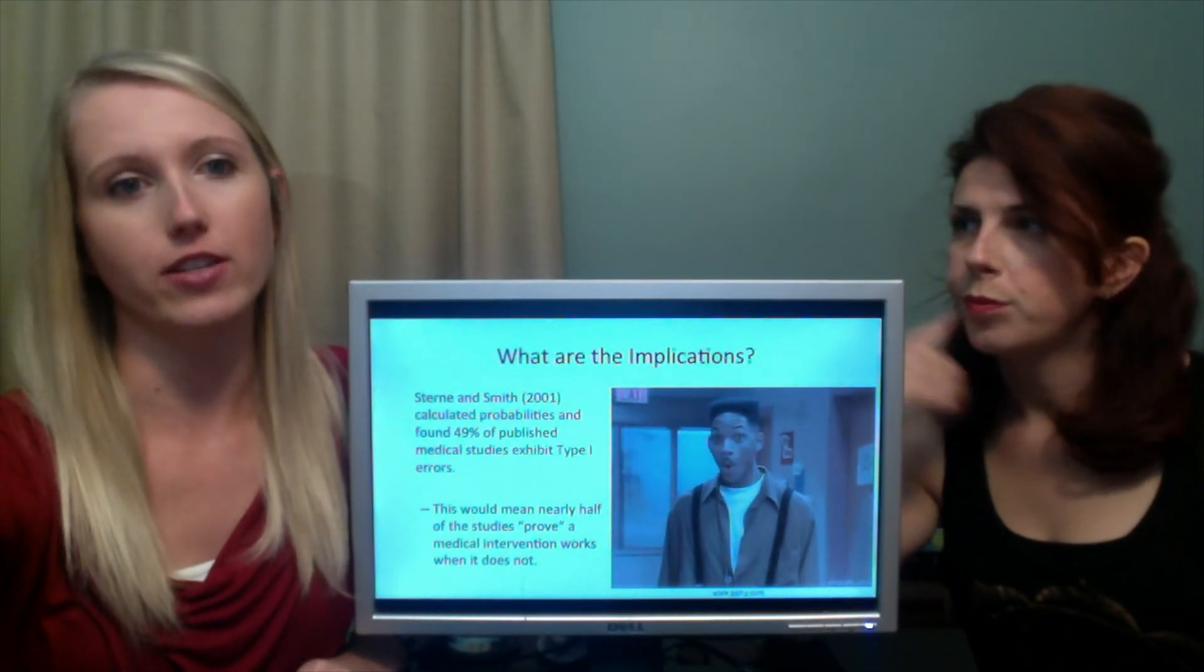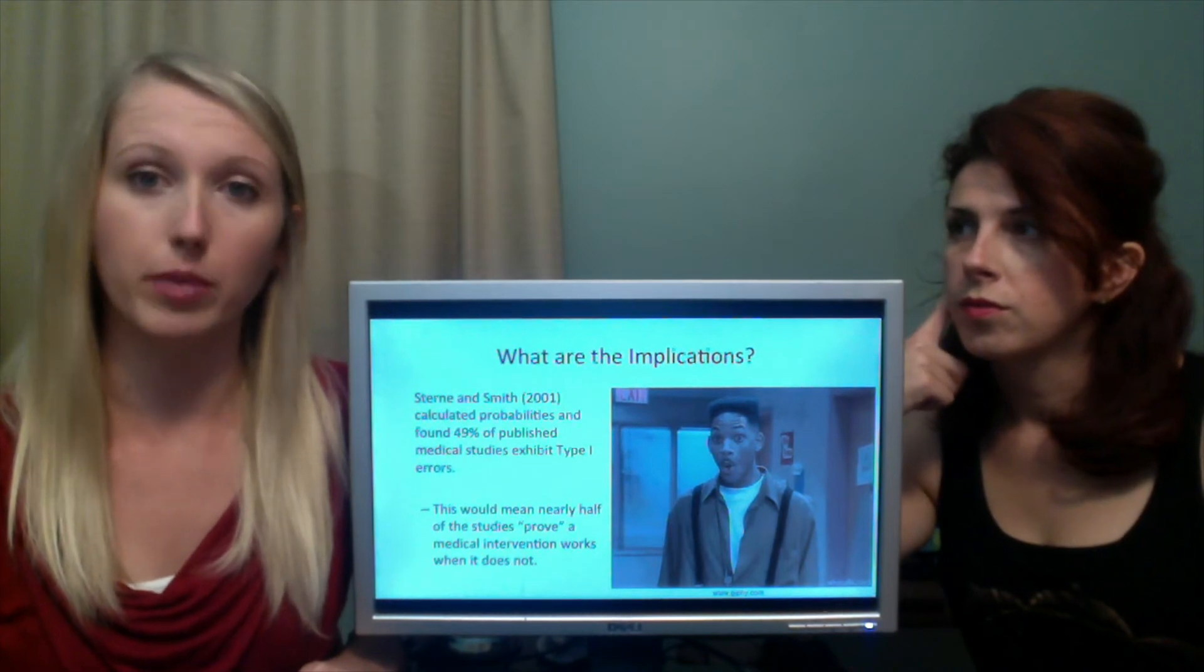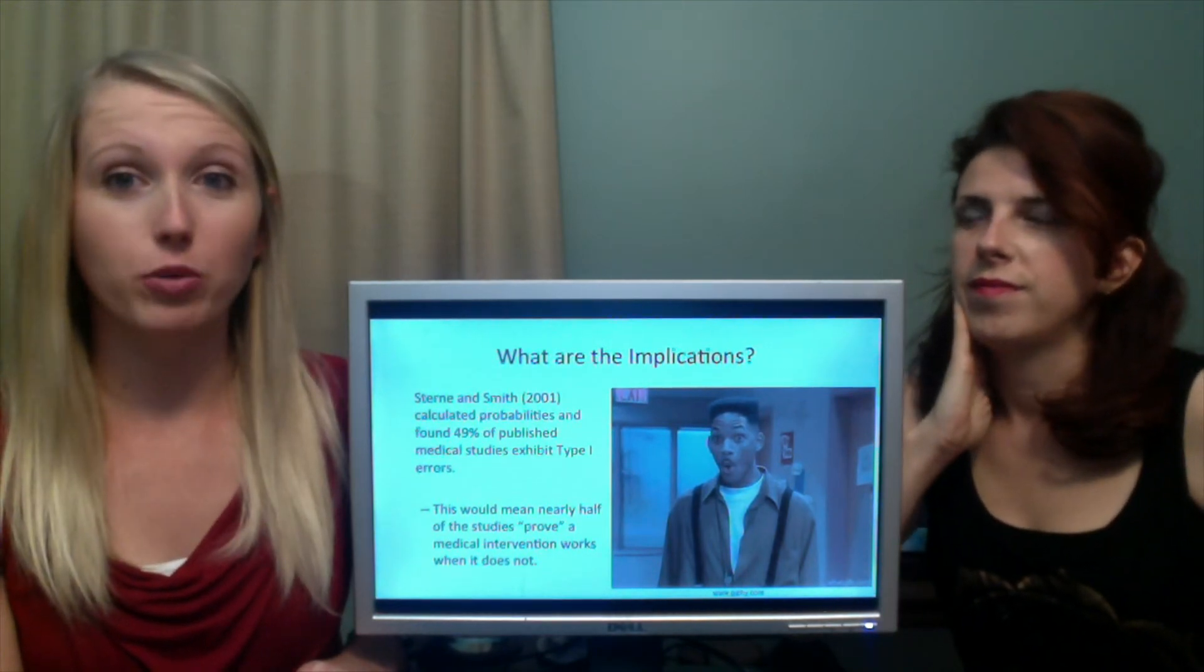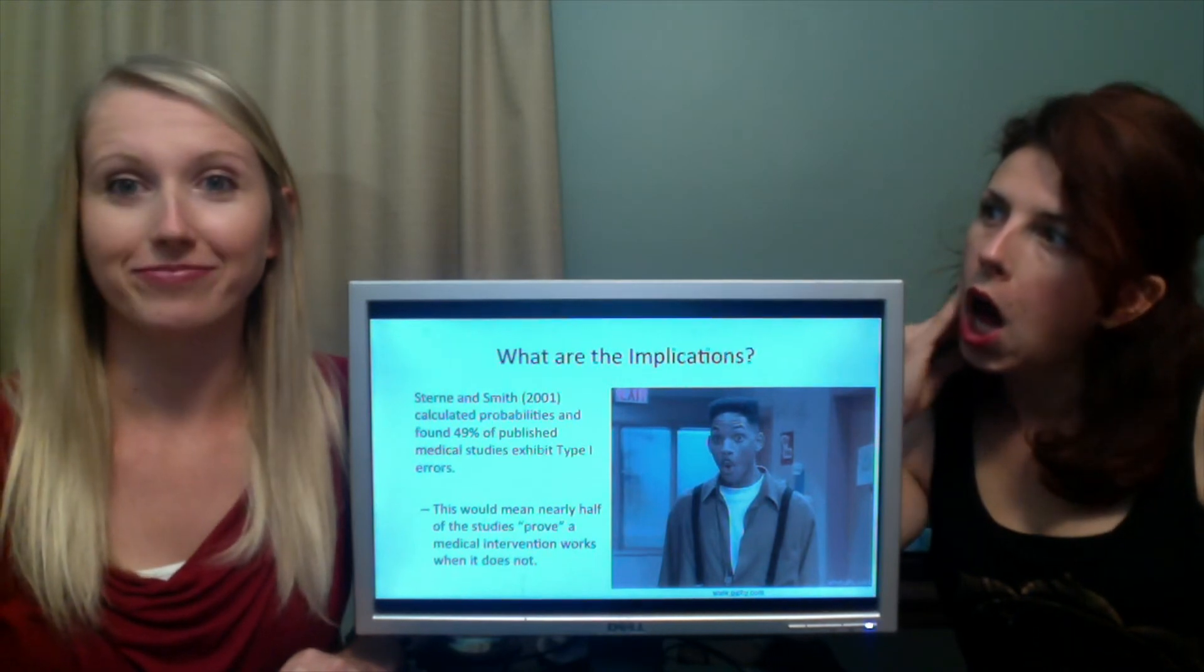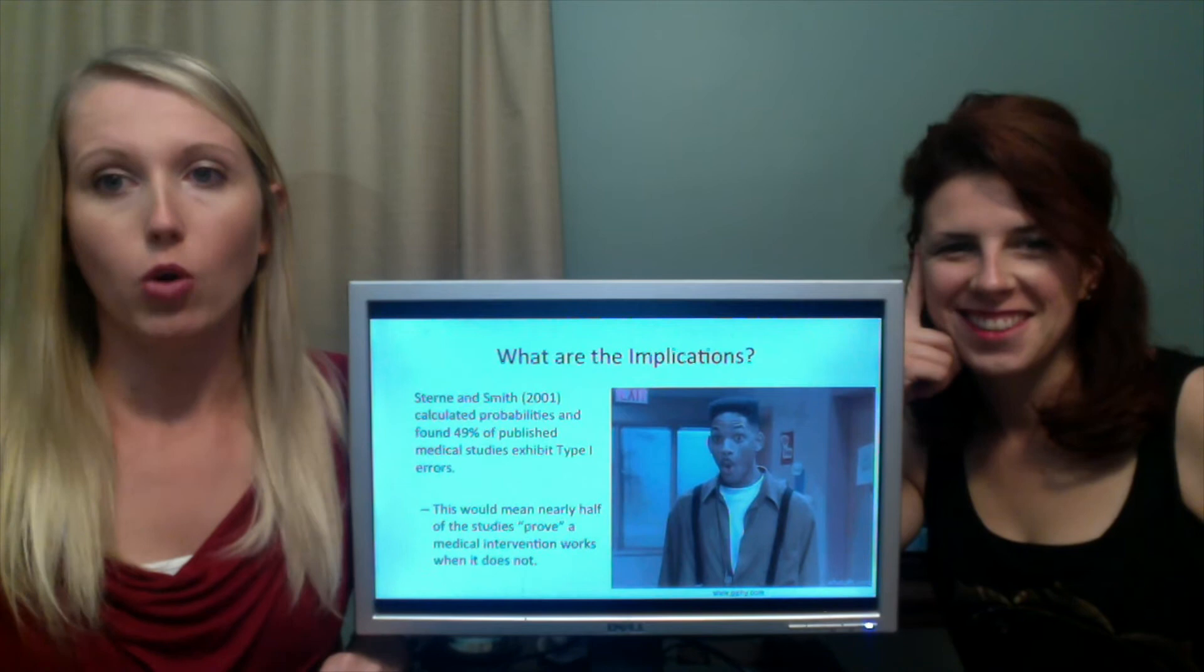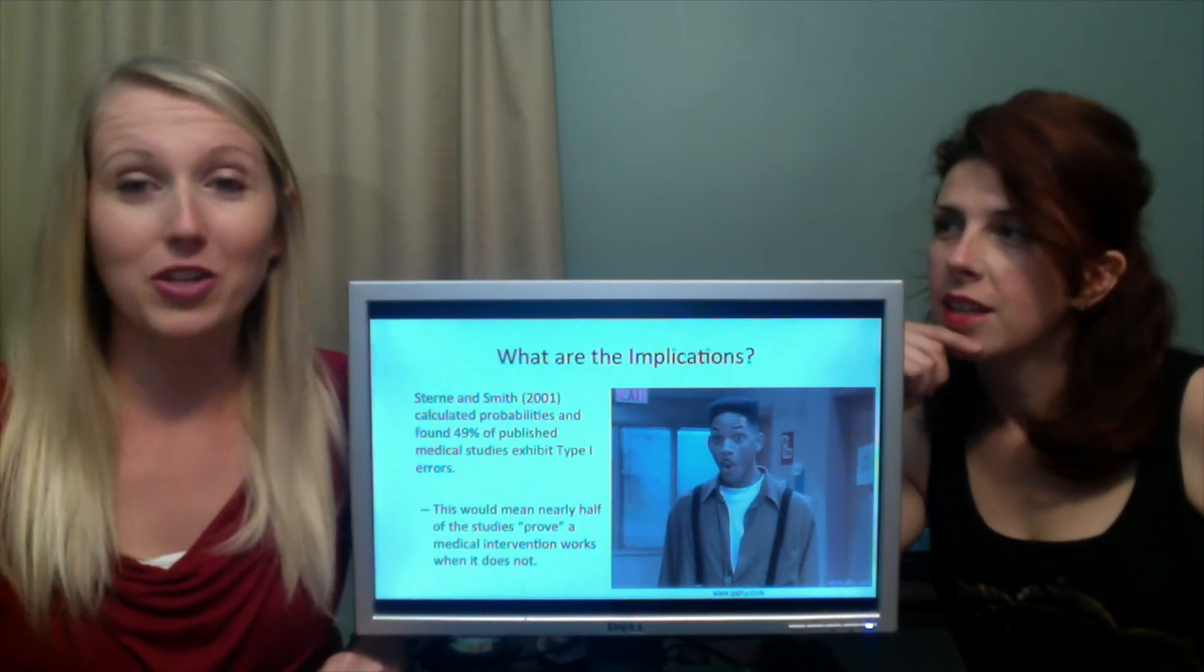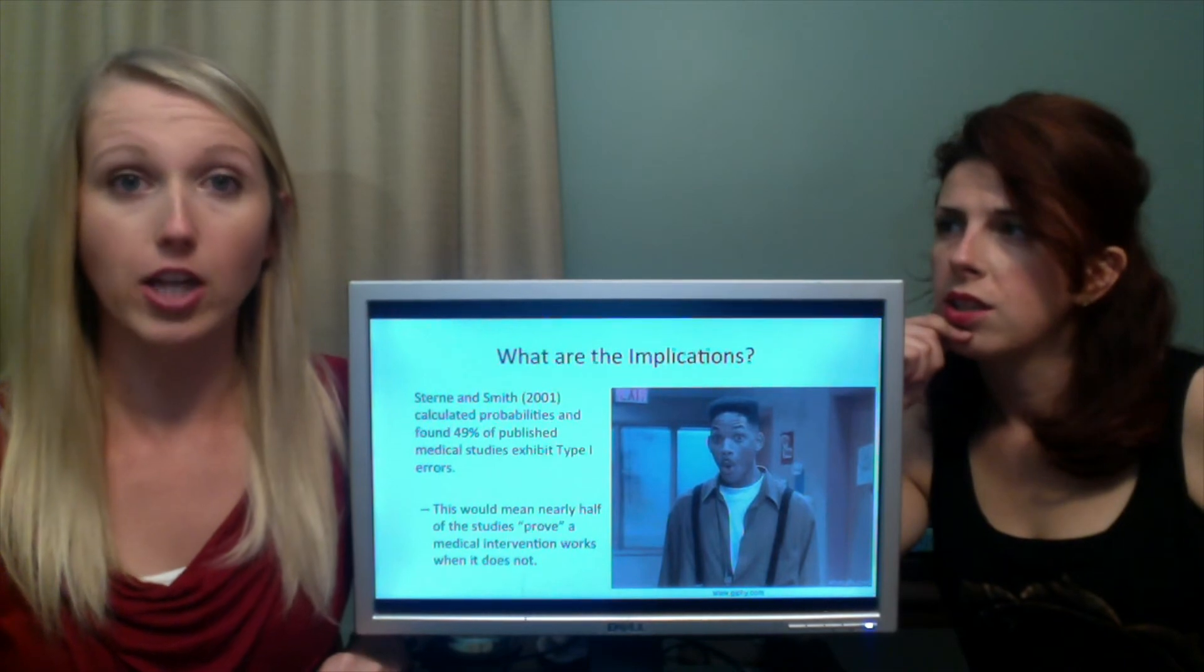So what are the implications for this? In my statistics book, they did a study and they predicted that 49% of published medical studies exhibit type 1 error. In layman's terms, what that means is nearly half of medical interventions out there don't work. The studies showed that it worked, but they don't actually work. Nearly half. And there was actually a college professor that taught medical students and he said, half of what I'm teaching you is wrong. Problem is, I don't know which half. And that's a perfect example. Because research is constantly proving and disproving previously held beliefs all the time.